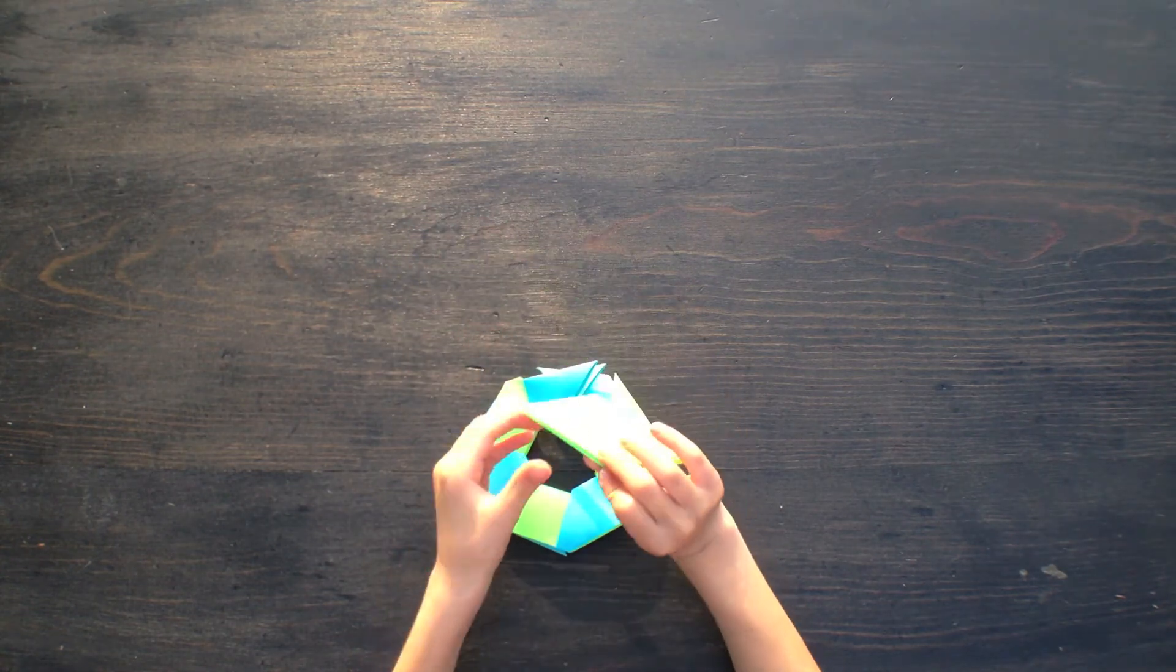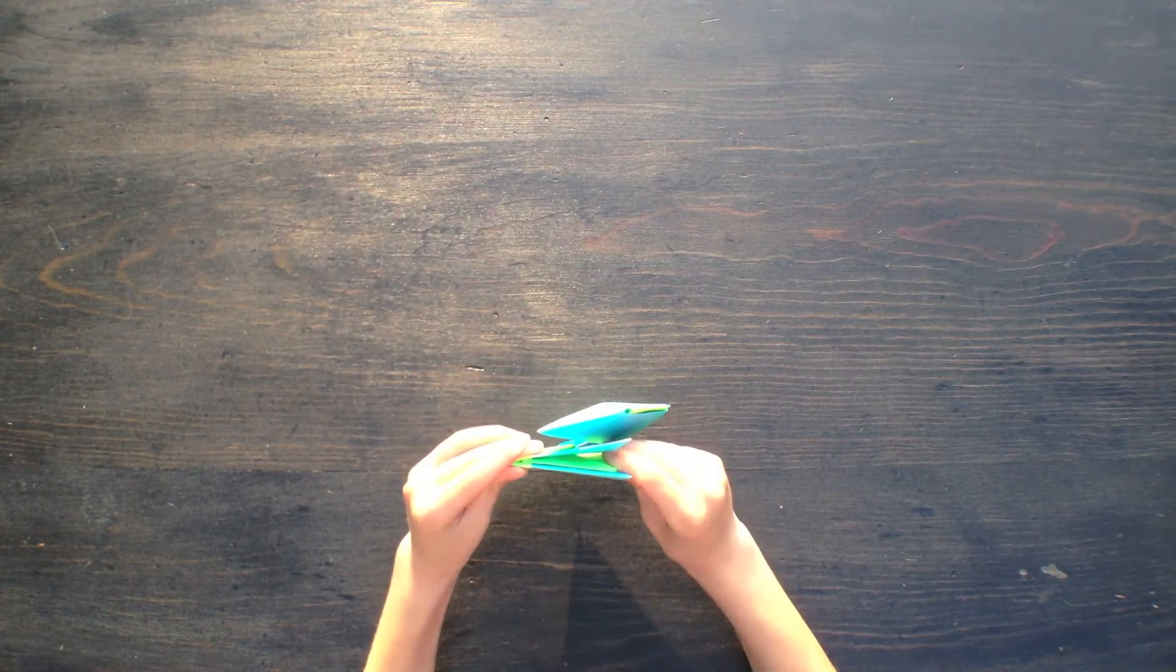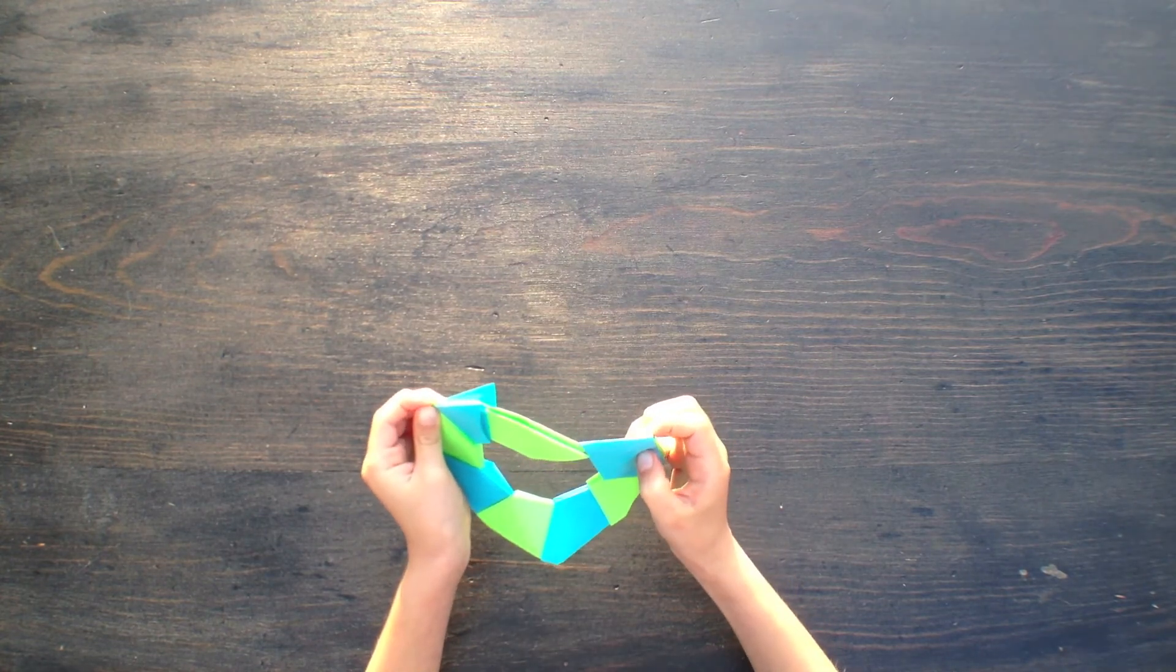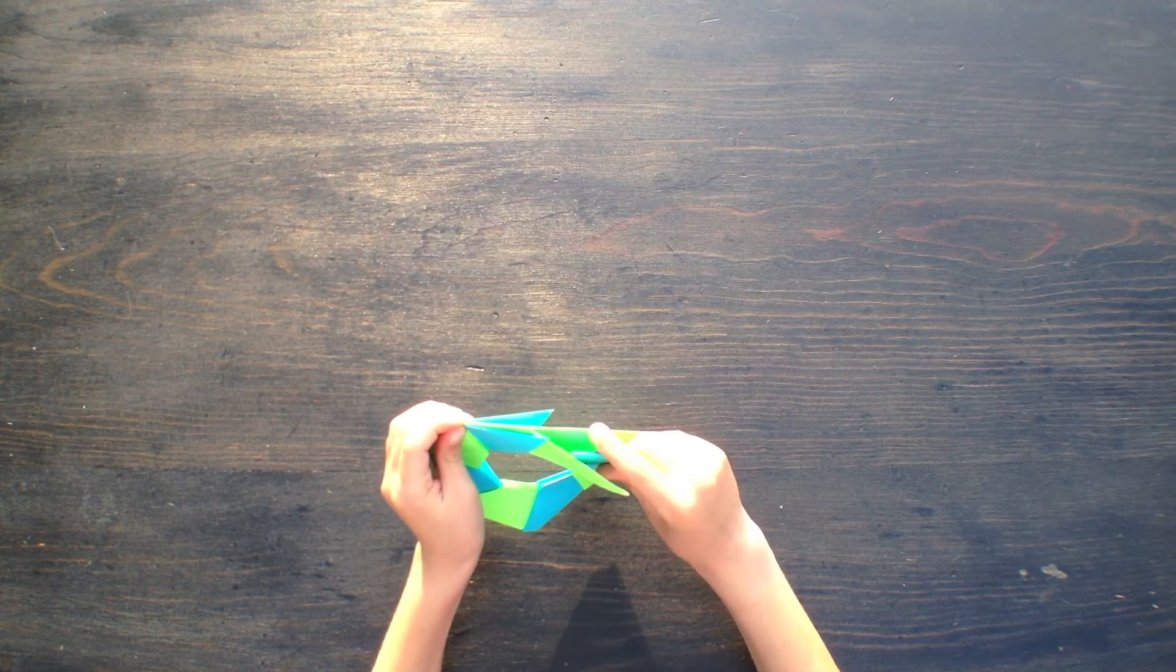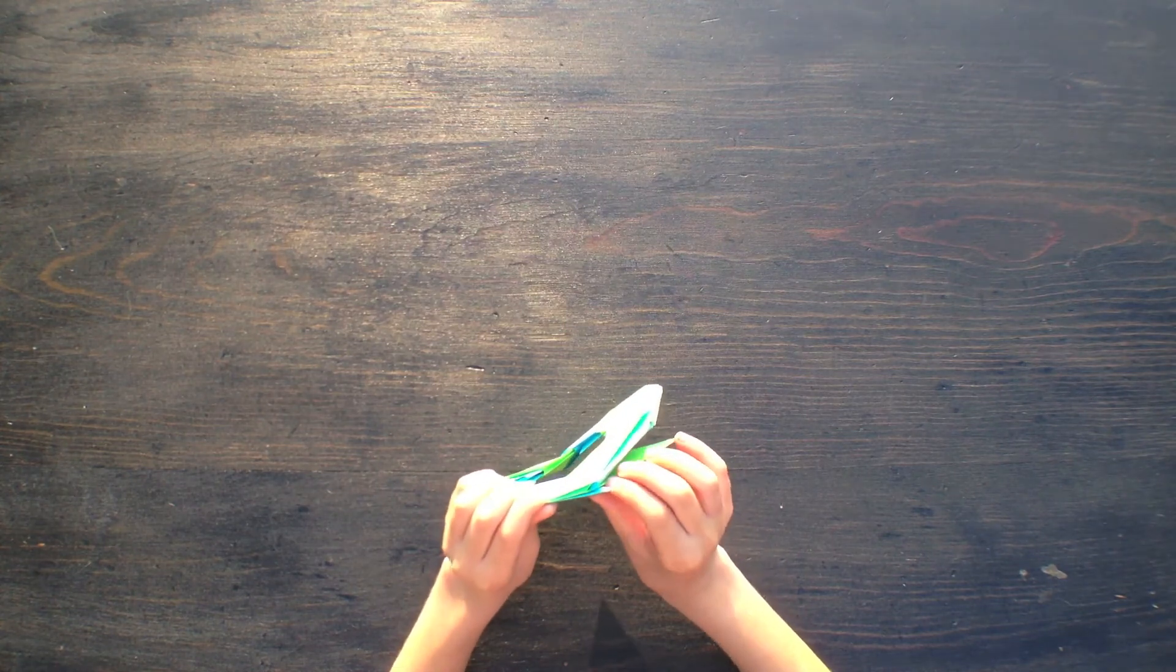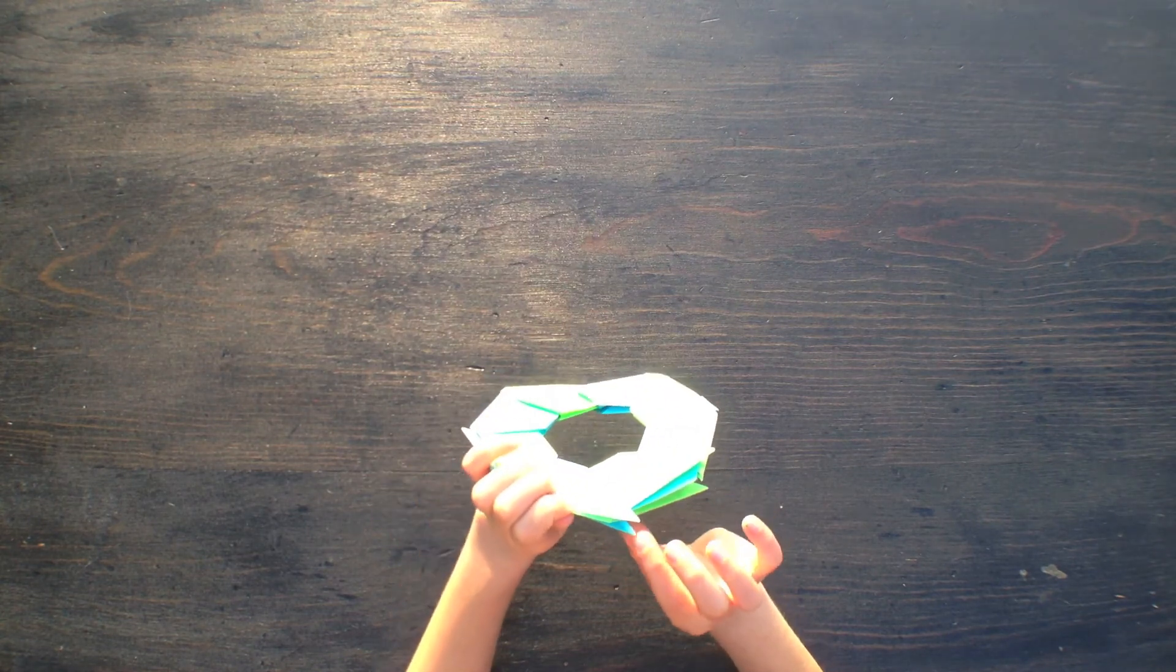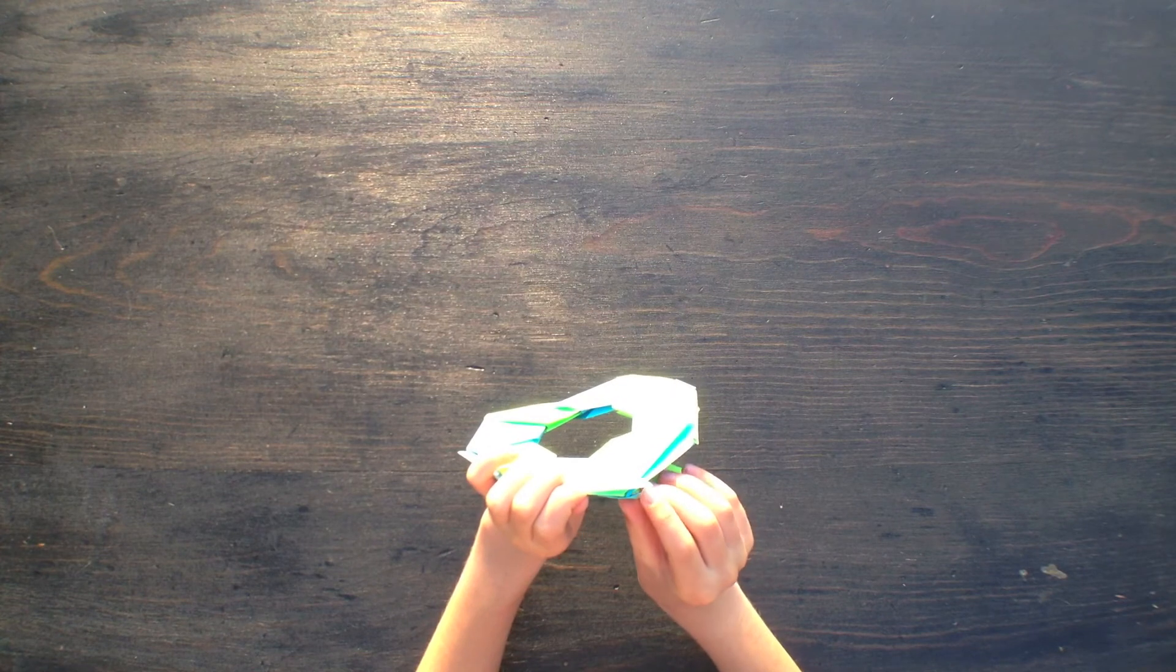Take the last piece and slide it into here. Pull this back and slide it into there. And then you see there's one thing in the middle right there. You want to tuck these in on either side of it.